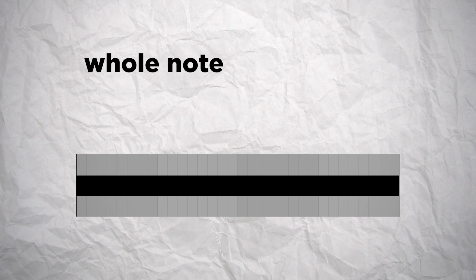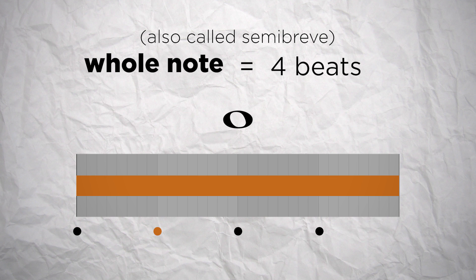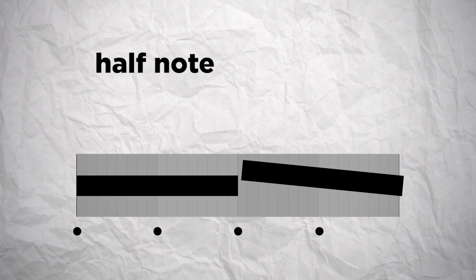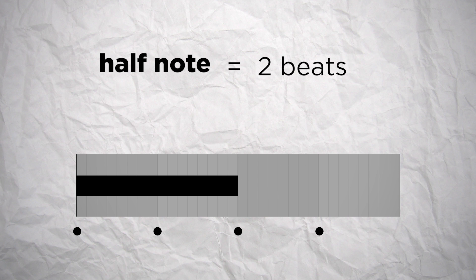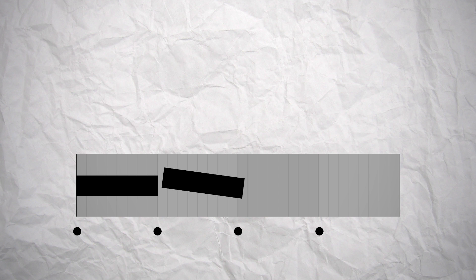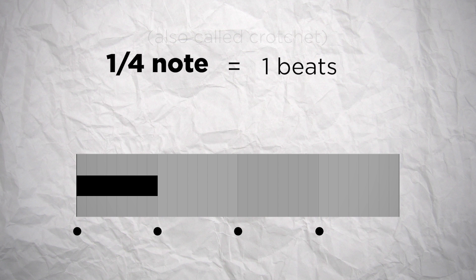Then one of the biggest notes we can have is a whole note, which is 4 beats long. This is noted as a little circle. Then this whole note can be divided in two half notes, which are 2 beats long. It's noted with a little circle with a tail, like this. Then if we divide this note by 2 again, we have a quarter note, which lasts for 1 beat, and this one is noted as a black note with a tail.